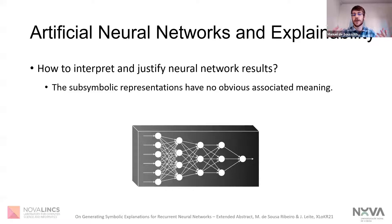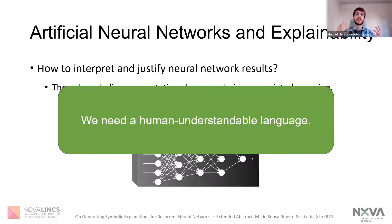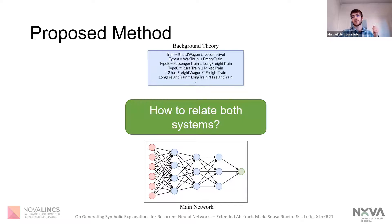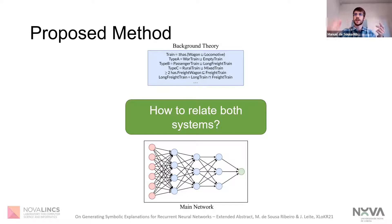We believe that if we want to be able to discuss and reason about the tasks being performed by these models, first we need a human-understandable language with meaningful concepts and relationships between those concepts. So let's say we have this language represented as our background theory, and an artificial neural network whose output we want to justify. Our question remains: how can we relate both systems in a way that affords us to produce symbolic justifications that are human-understandable for the outputs of this neural network? Our proposal is to establish a mapping between the activations of this neural network and single concepts from our background theory.